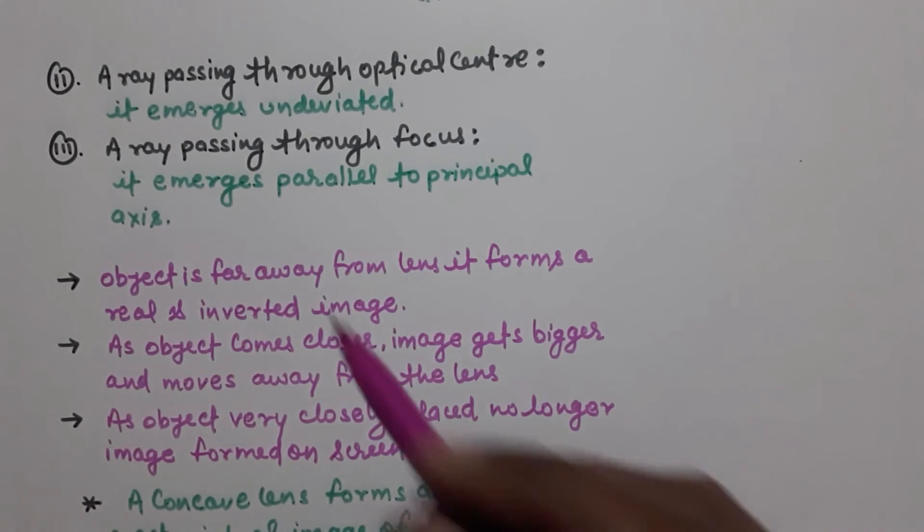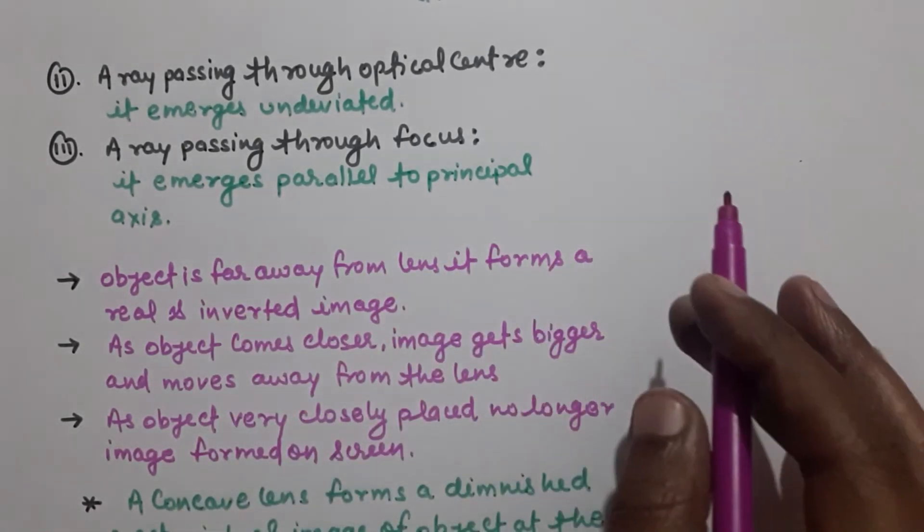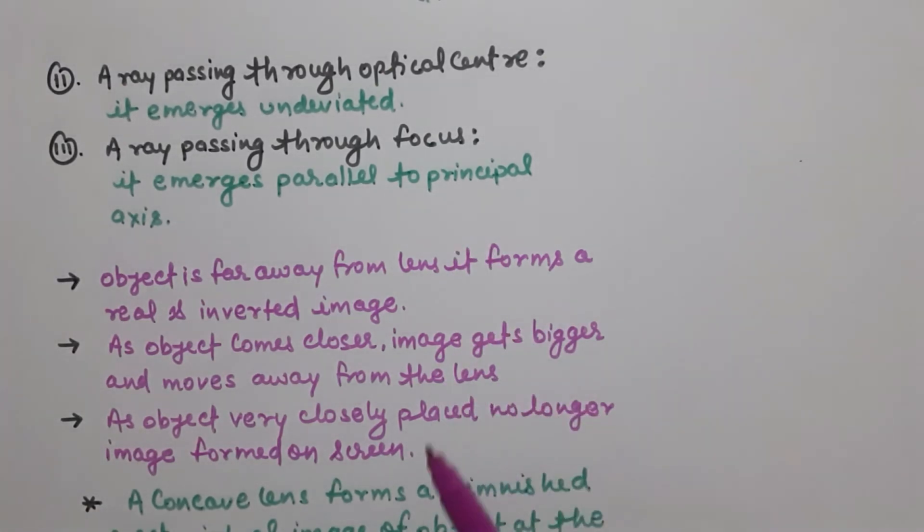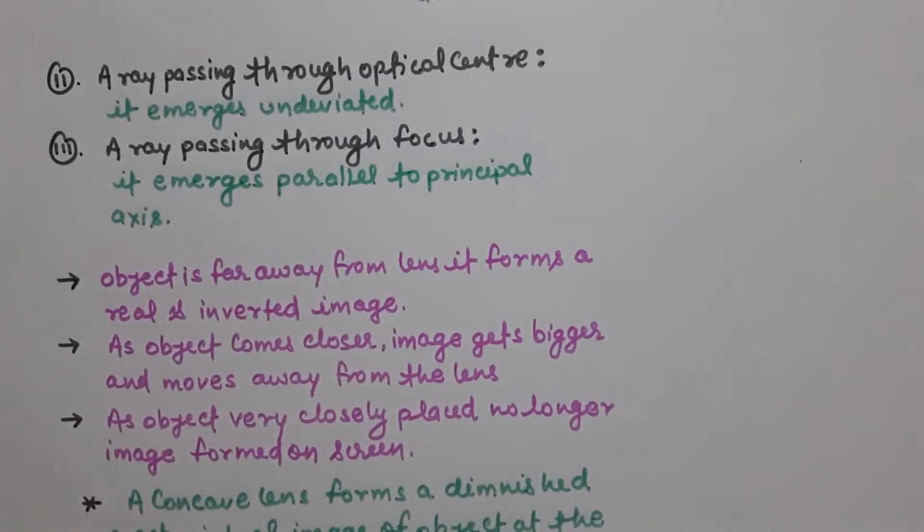Another thing is a ray passing through focus. It emerges parallel to principal axis. After passing through the lens, after refraction, it will pass parallely to the principal axis. Understand?